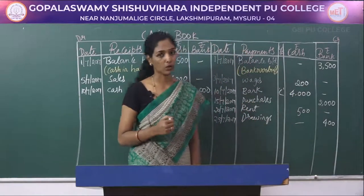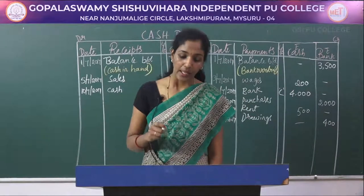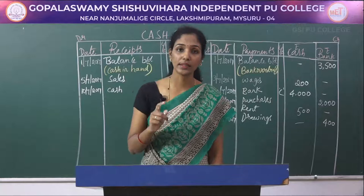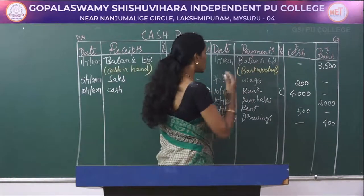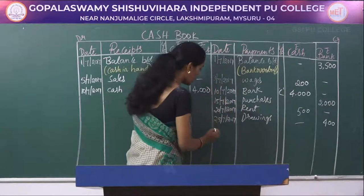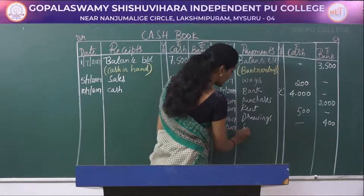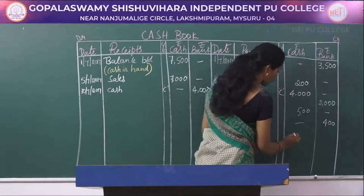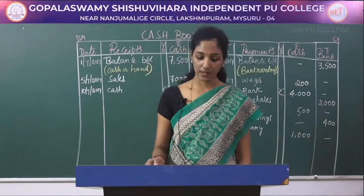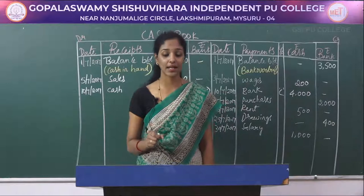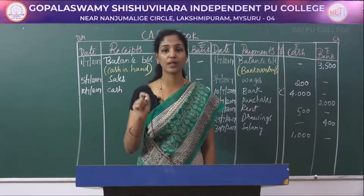The next transaction is 30/7/2017: salary paid rupees 1000. Salary paid is a payment, so record it on the credit side. Write 'salary' for 30/7/2017 and enter rupees 1000 in the cash column. Next, also on 30/7/2017: paid Ganesh, partly in cash and partly by cheque, total rupees 4000.